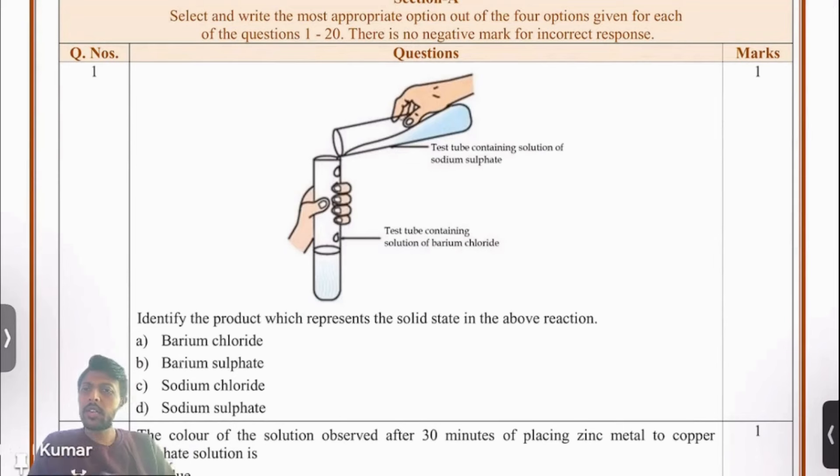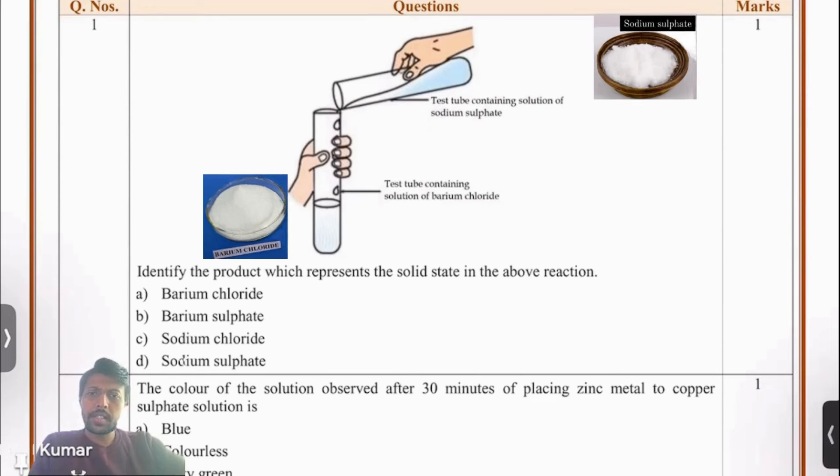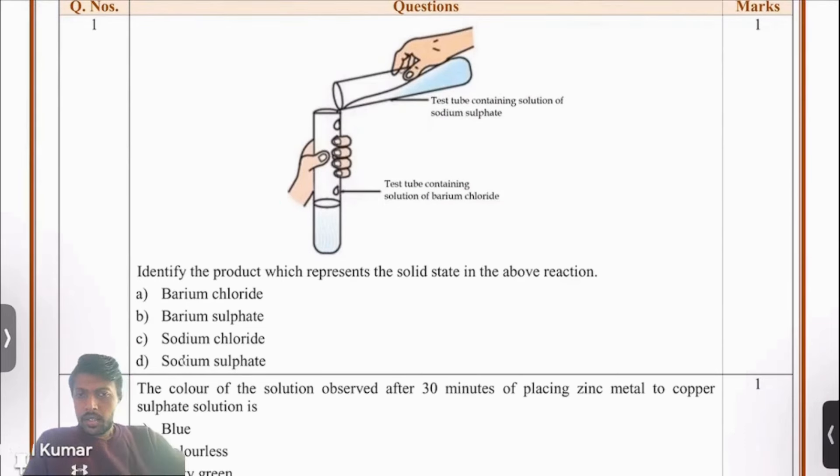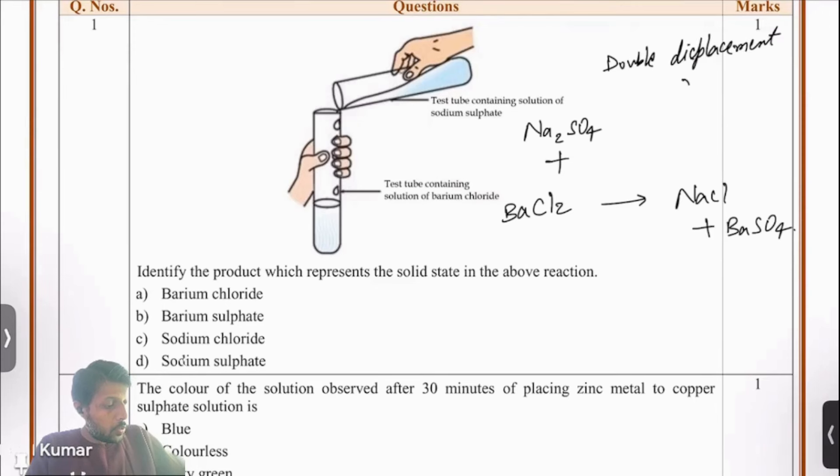Let's look at the first question. We have two chemicals, sodium sulphate, Na2SO4, and barium chloride, BaCl2. Once these two react, we are going to have a double displacement reaction resulting in sodium chloride and barium sulphate. The question is asking which of these two products represents a solid state, or in other words, which of these will appear as a precipitate in your product?